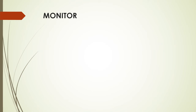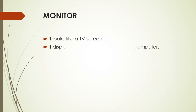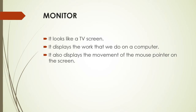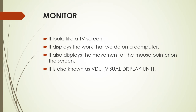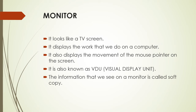Now first we will see the monitor. You already know what a monitor is — it looks like a TV screen. The screen which we use for display is called a monitor. It displays the work that we do on a computer and also displays the movement of the mouse pointer on the screen. It is also known as VDU, which means Visual Display Unit. The information that we see on a monitor is called soft copy, and the printed output on paper of the soft copy is called hard copy.